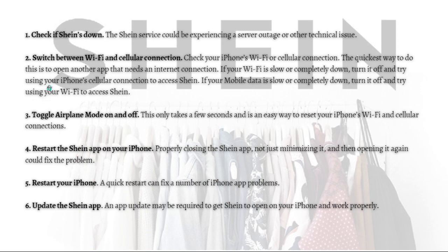Next, what you can do is switch between a Wi-Fi and cellular connection. Check your iPhone's Wi-Fi or cellular connection — the quickest way to do this is to open another app that needs an internet connection. If your Wi-Fi is slow or completely down, turn it off and try using your iPhone's cellular connection to access Shein. If your mobile data is slow or completely down, turn it off and try using your Wi-Fi to access Shein.